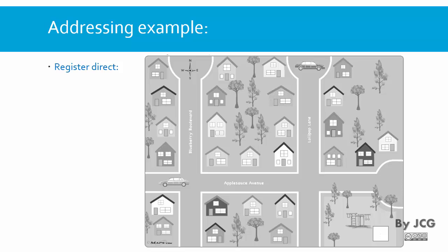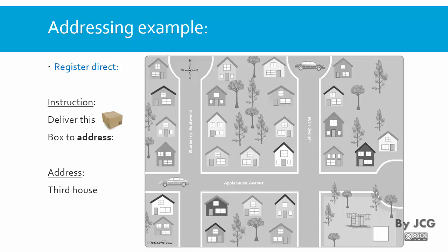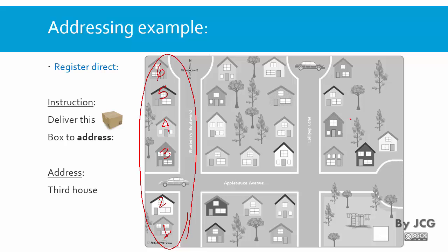So the register direct would be something like this. Imagine you have a box that you want to deliver to this neighborhood, and you are going to give an instruction to the person that's going to deliver it. The instruction is going to say: deliver this box to an address. The address you're going to give is going to be a special address — something like the third house. In this type of addressing, only a few houses are going to be accessible in this manner. Only these houses are allowed to be delivered in this particular instruction.